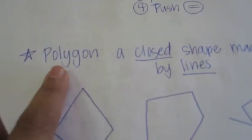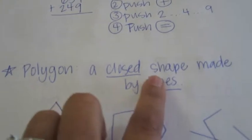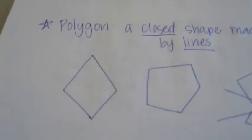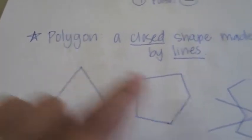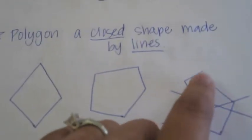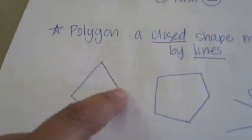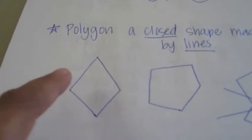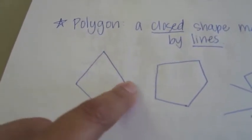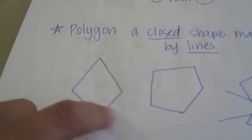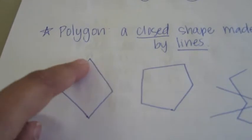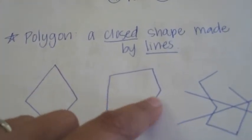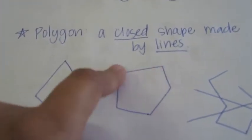Understanding Polygons: Remember, a polygon is a closed shape made by lines. What you see here is something that's closed — there are no openings and they're lines, not curves. These are straight lines. This is a polygon — it's lines and it's closed.